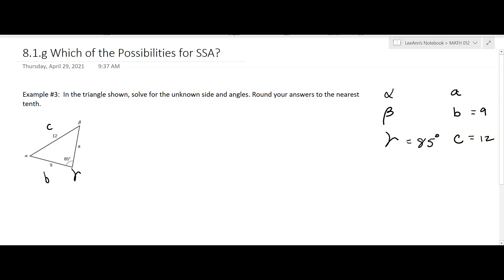Okay, looking at what we know, we're going to use then sine beta over b equals sine gamma over c. And then plugging in what we know, sine beta over 9 equals sine 85 degrees over, I think it's 85, yeah, 12.